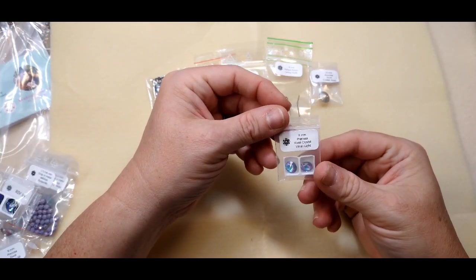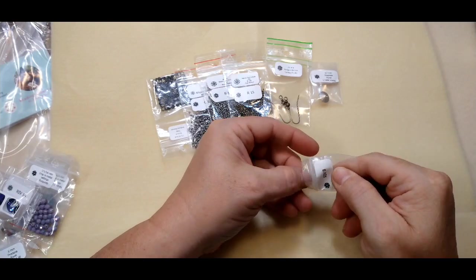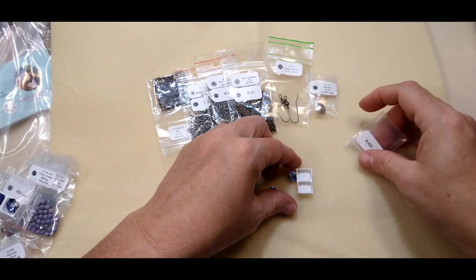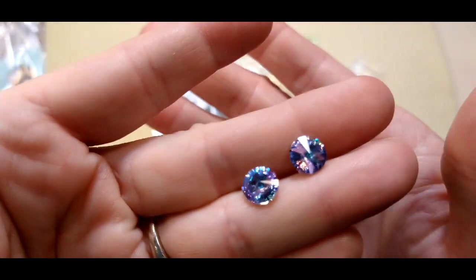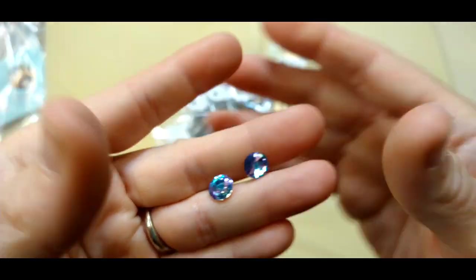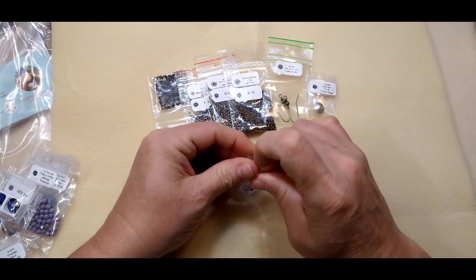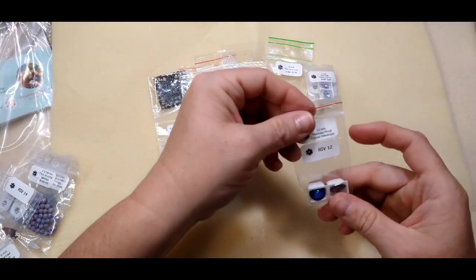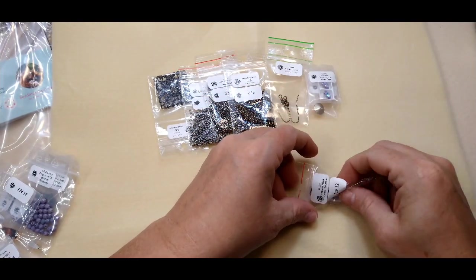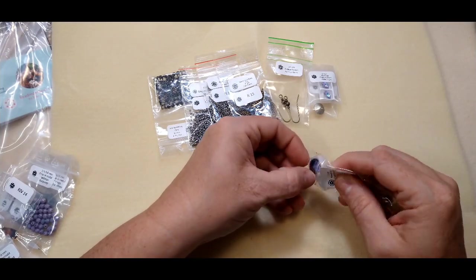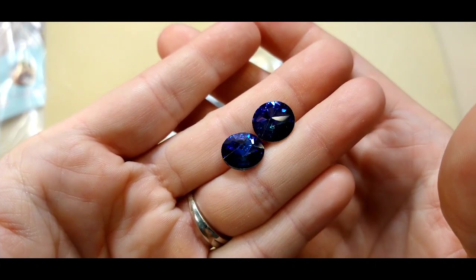Then we have got eight millimeter Preciosa Rivoli crystal vitriolite. These are tiny little bags, but I want to take these out so you can see them because they are so pretty. And again, they're numbered. So it tells you exactly what you're going to need with the patterns in here. Look how pretty these are. And Erica and I found that we share a love of light colors. So it was really easy to put together the colors that we wanted to go with because we both enjoy the same shades and colors.